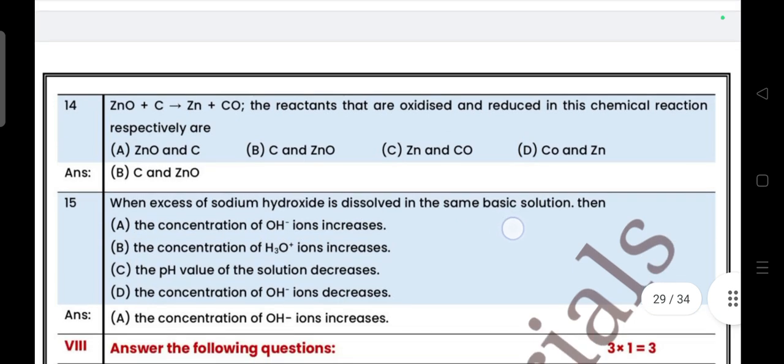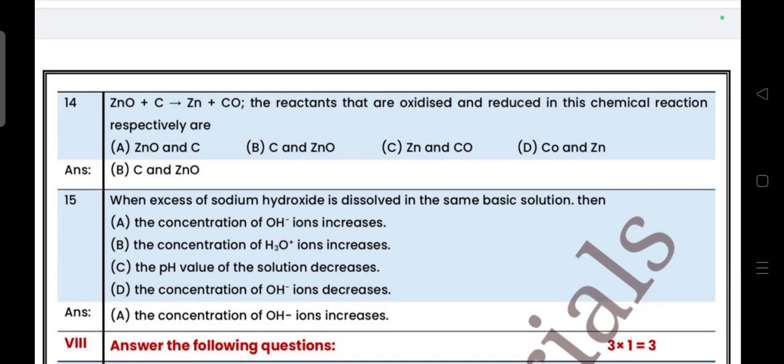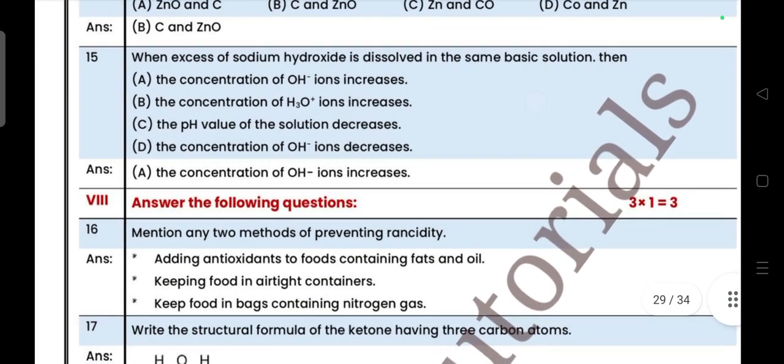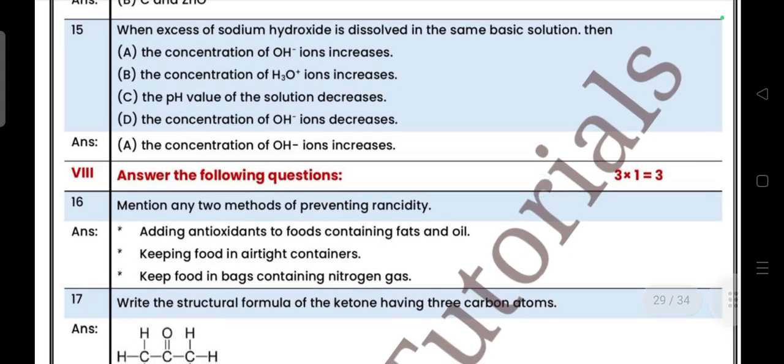Zinc oxide plus carbon gives zinc plus carbon monoxide. The reactants that are oxidized and reduced: carbon is oxidized and ZnO reduces. When excess of sodium hydroxide is dissolved in the same basic solution, then answer is A: the concentration of OH⁻ ions increases.